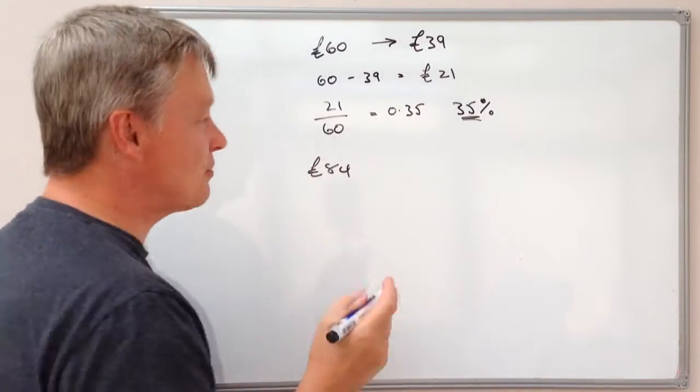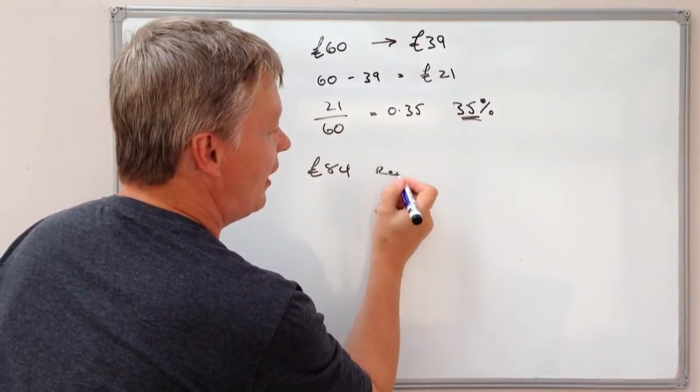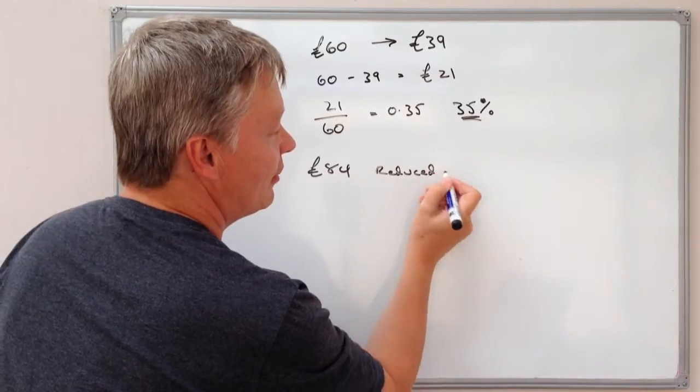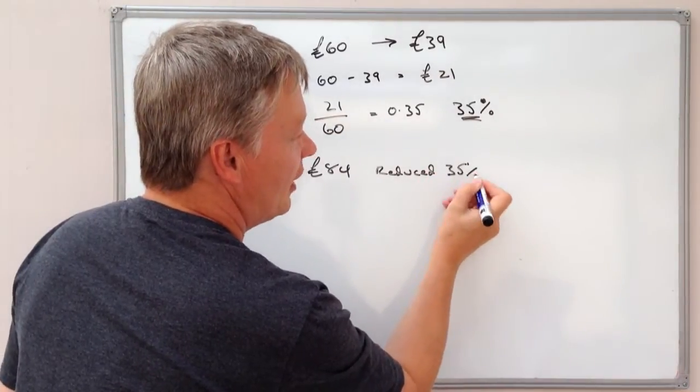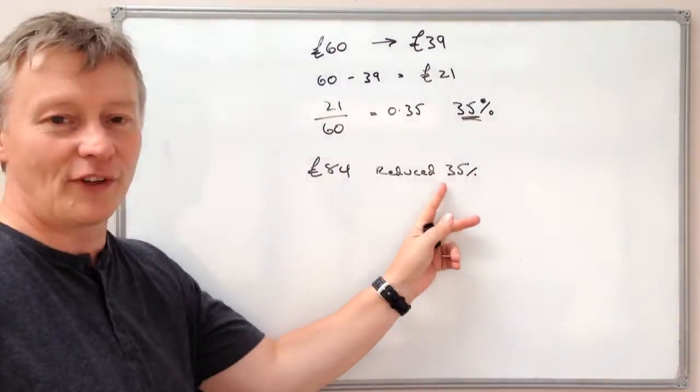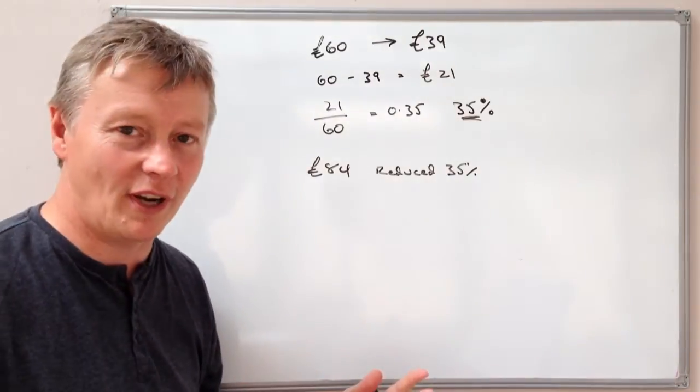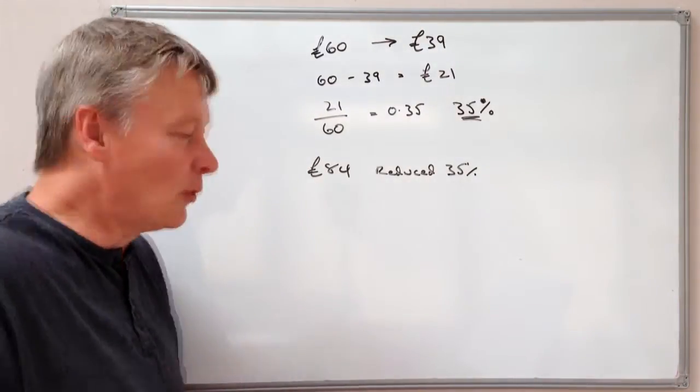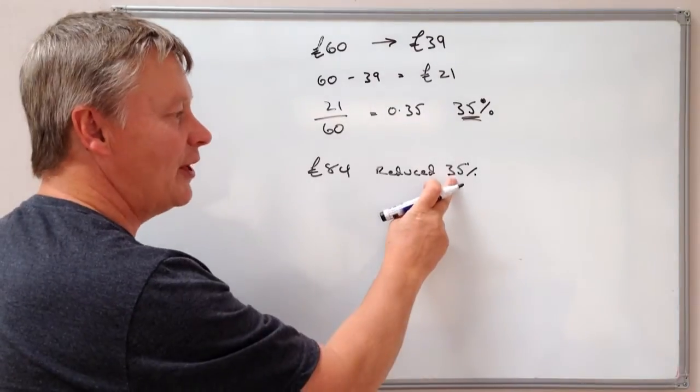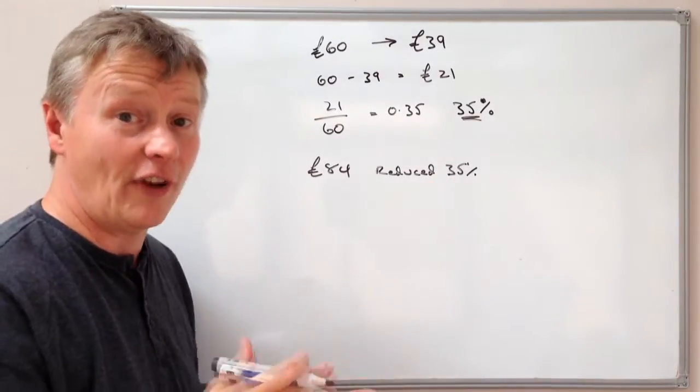and it's reduced in this particular case by 35%. So if it's reduced by 35%, what's the new price? Well how are we going to work that out?